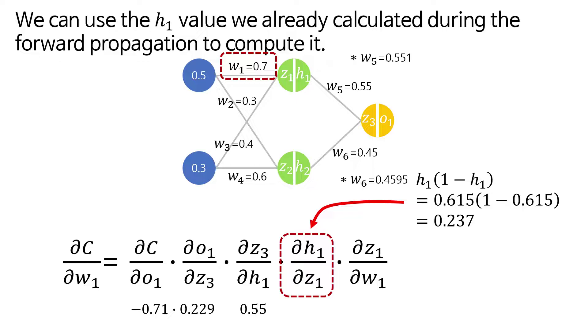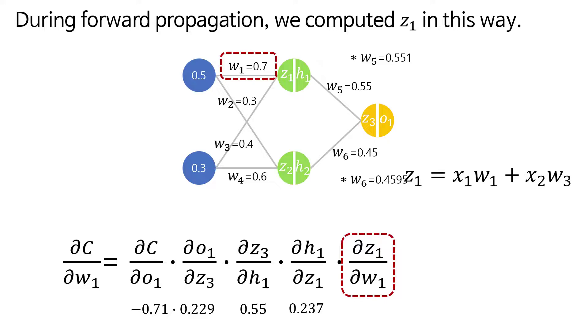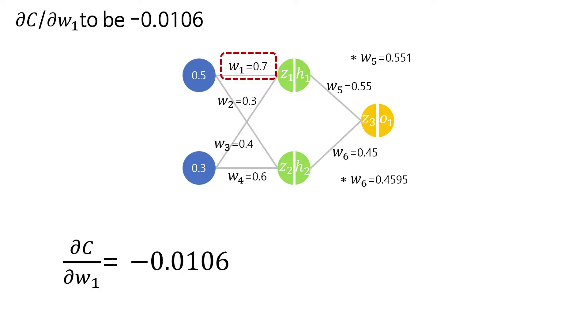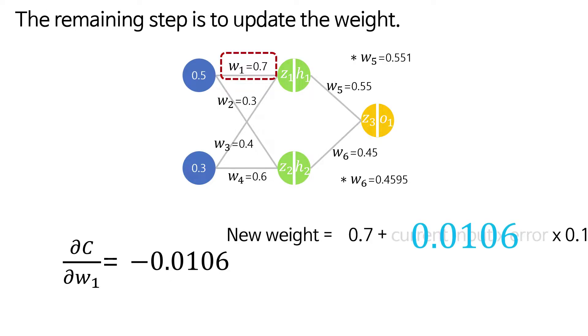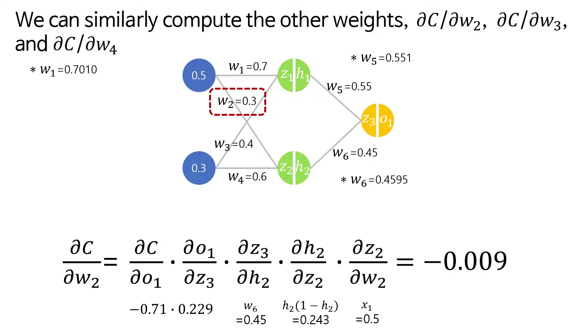We can use the h1 value we already calculated during the forward propagation to compute it. Lastly, we can compute ∂z1/∂w1 like this. During forward propagation we computed z1 in this way. If we differentiate it, the final term becomes the input value x1. Using this, we find ∂c/∂w1 to be -0.0106.